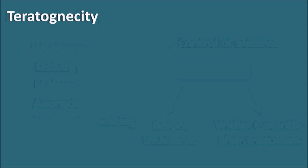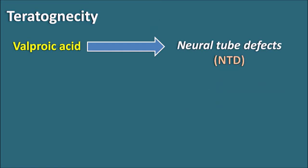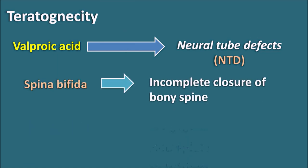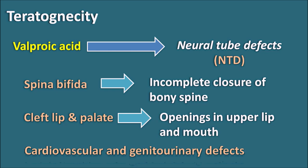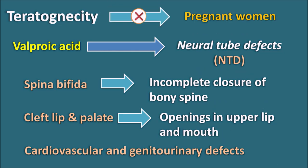Another important side effect is teratogenicity. Valproic acid is highly teratogenic and can produce neural tube defects (NTD), including spina bifida — incomplete closure of the bony spine. It can also produce cleft lip and cleft palate (openings in the upper lip and mouth), as well as cardiovascular and genitourinary defects in newborns. Therefore, valproic acid should not be given to pregnant women or women of childbearing age.